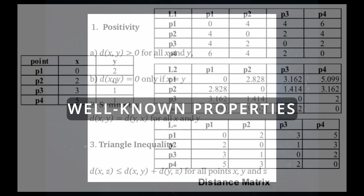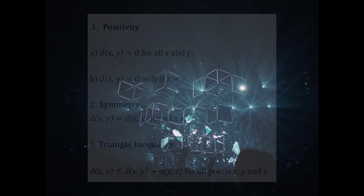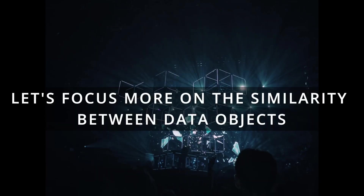Distances such as Euclidean distance have well-known properties. For a distance between two points x and y, three properties hold. First, positivity: any distance between x and y is greater than zero if x and y are not equal, and distance is zero only if x equals y. Second, symmetry: distance between x and y always equals distance between y and x. Third, the triangle inequality: distance between x and z is always less than or equal to distance between x and y plus distance between y and z. Measures satisfying all these properties are called metrics.